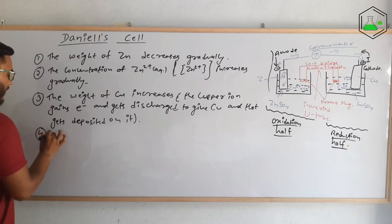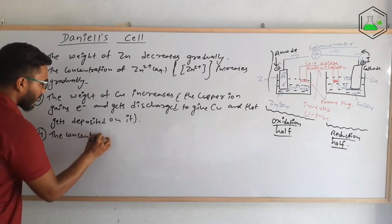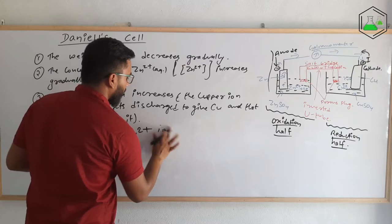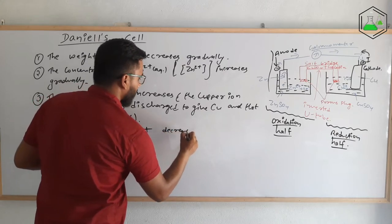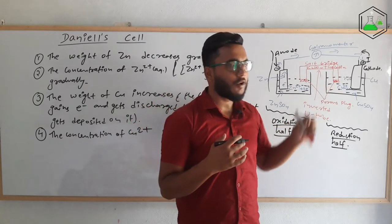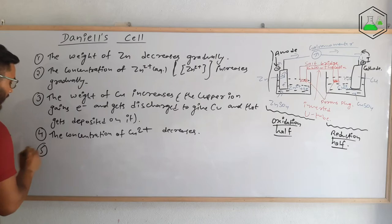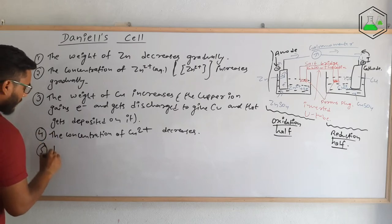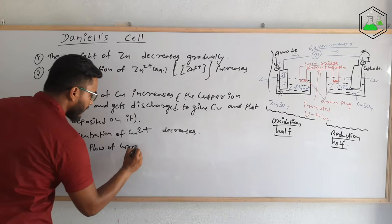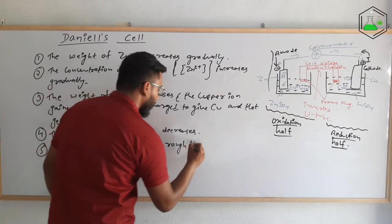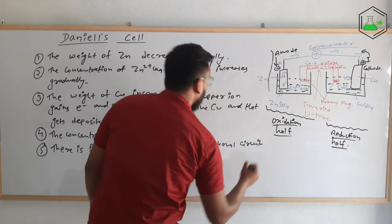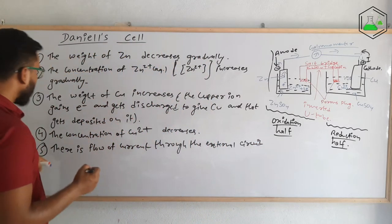Fourth observation: the concentration of cuprous ions decreases, because all the Cu²⁺ ions are gaining electrons and converting into copper. Fifth observation: there is a flow of current through the external circuit. These are the five observations we make in Daniel's cell.